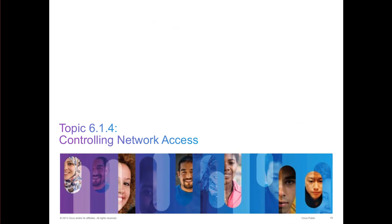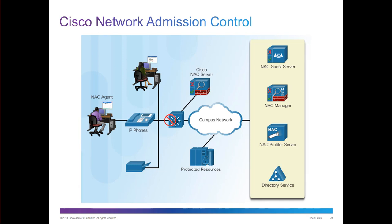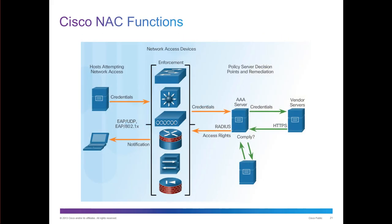With NAC — Network Admissions Control — you have the ability to control what's happening on the network. When you connect, should you be allowed on the network? Part of NAC's functions is that when you go to connect, it provides some type of authentication to verify who you are, and also whether you meet the correct security profile. Network access devices could be switches, access points, routers or firewalls, and there's normally some type of AAA and NAC server verifying that you meet the criteria before you get access to network resources.